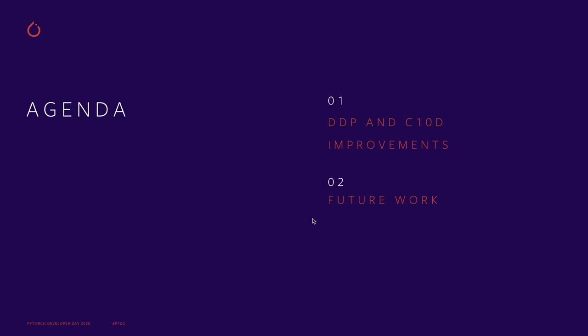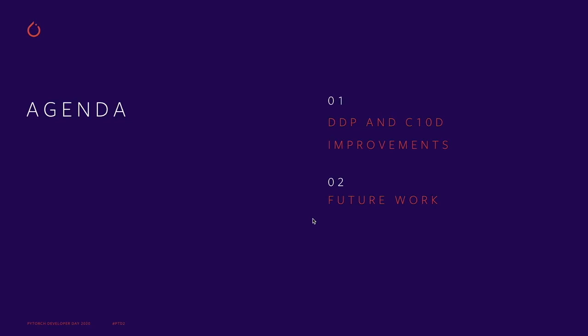In terms of agenda, I'm going to talk a little bit about Distributed Data Parallel, which is DDP, and C10D, which is a distributed communication library. And then I'll talk a little bit about future work in terms of what's coming in the future for PyTorch Distributor.